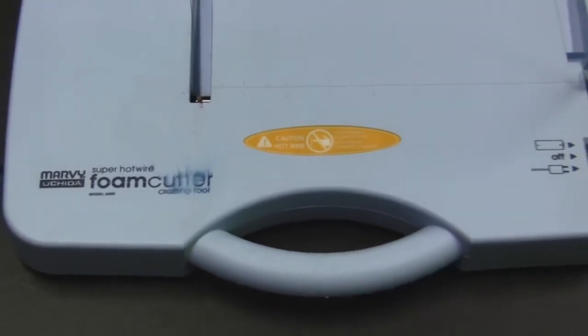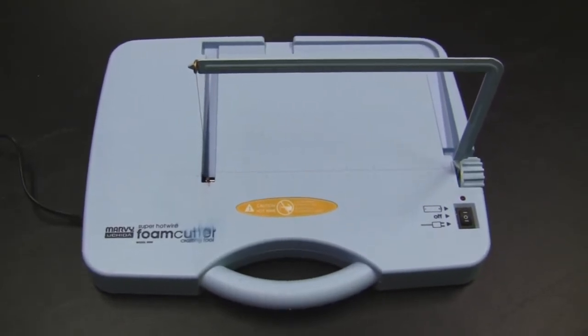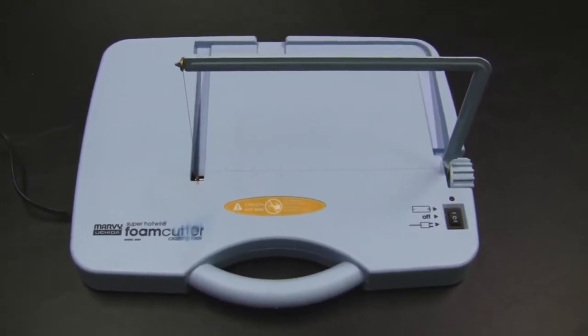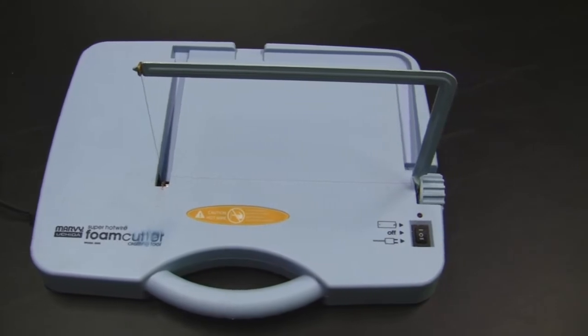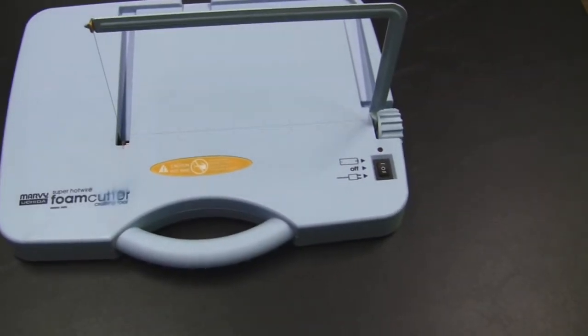This is a very useful tool for cutting out foam. It is a small tabletop version of a hot wire that comes in very useful for cutting out foam pieces. Let's go ahead and take a look at some of the features.